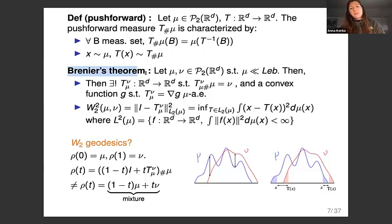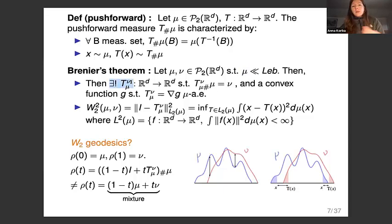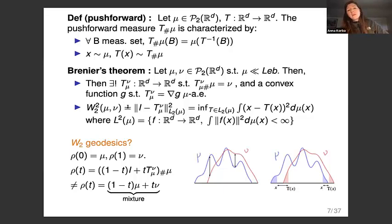I also need the notion of optimal transport maps. Brenier's theorem states that if you pick two distributions mu and mu prime in P_2, and mu is absolutely continuous with respect to the Lebesgue measure, then you can find a unique optimal transport map pushing mu onto mu prime, which is also the gradient of a convex function. This map realizes the Wasserstein-2 distance as the L^2(mu) norm of the identity minus this optimal transport map.